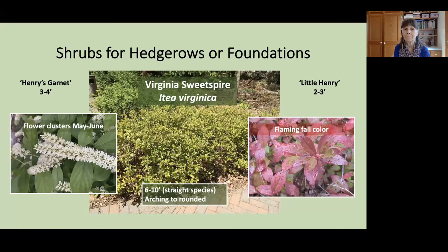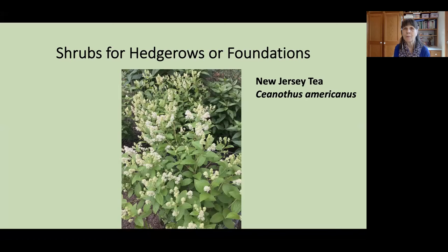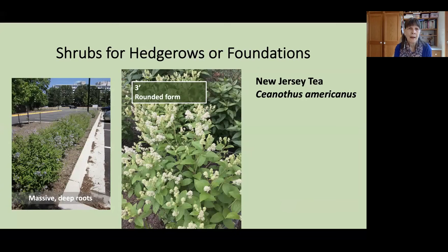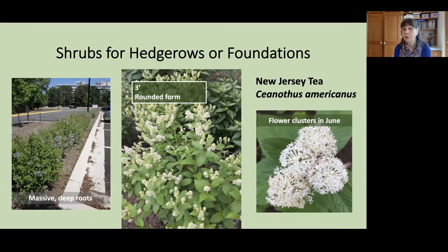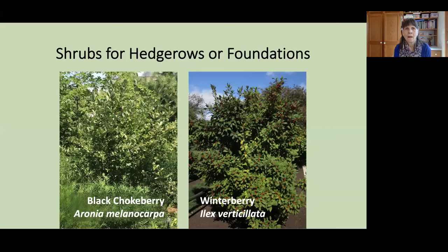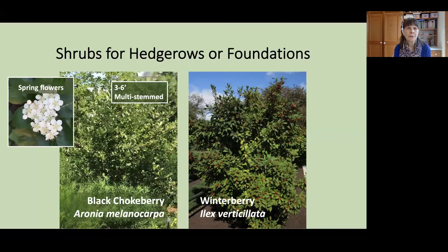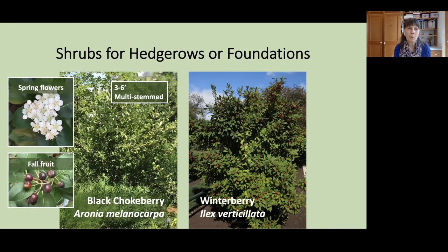Another lovely native shrub is New Jersey Tea, Ceanothus americanus. This one is three feet tall and wide with a very rounded form. This shrub is especially effective in hot and dry sections of your garden because of its massive, deep roots. It has flower clusters in June that are very popular with pollinators. Two more shrubs particularly attractive for their fruit: Black Chokeberry, Aronia melanocarpa, has spring flowers set against very shiny attractive foliage, and forms a fall fruit that can be eaten both by humans and birds. It is usually multi-stemmed and you can either allow it to form a single shrub or allow it to spread into a colony.